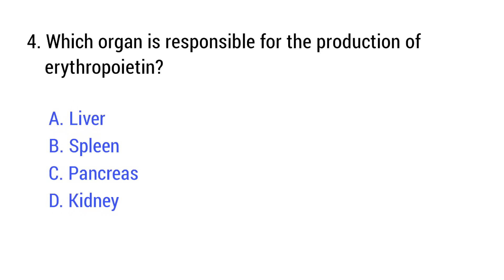Question number 4. Which organ is responsible for the production of erythropoietin? The right answer is option D: Kidney.